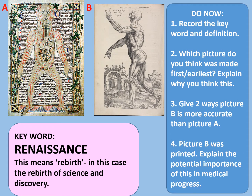The renaissance is also famous for its art style, as shown with these two pictures. Have a go at these tasks: firstly, record the key word and definition; secondly, which picture do you think was made first or earliest and explain why; thirdly, give two ways that picture B is more accurate than picture A; and fourthly, picture B was printed — explain the potential importance of this in medical progress. Pause the video here while you complete those tasks.